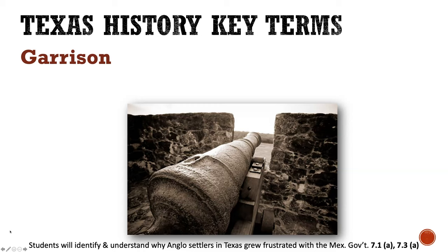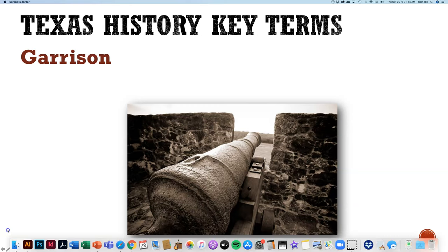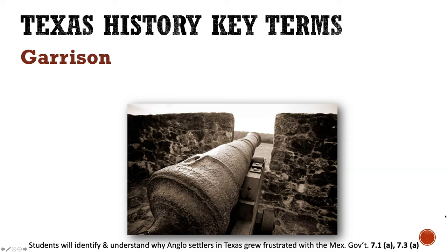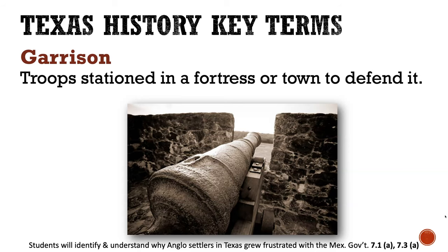You have in Canvas a link to a Google Doc version of the C-notes that go with this presentation. What I'd like you to do is watch this presentation, and when you reach a point where you need to write down notes, you can pause the video, fill in your notes, and then start it up again. A garrison is another word for troops or soldiers who are stationed in a fortress or in a town to defend it. A garrison is not a building — it is the troops stationed in a fortress or town.